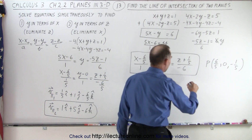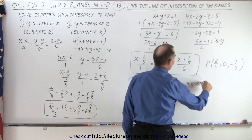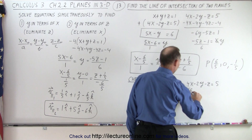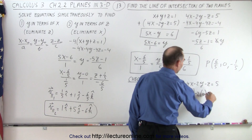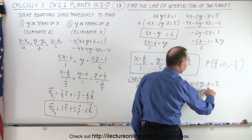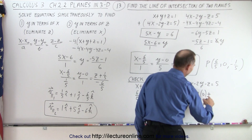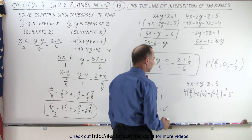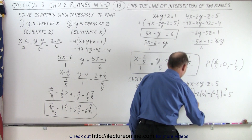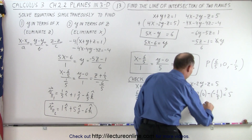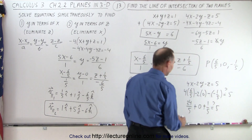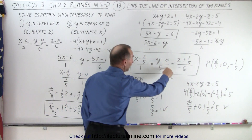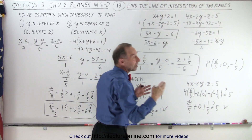Now let's plug that point into the second equation: 4x minus 2y minus z is equal to 5. Plugging in x, y, and z: 4 times 6/5 minus 2 times 0, minus negative 1/5, which gives us minus minus 1/5. Is that equal to 5? We have 24/5 plus 0 plus 1/5 — that's 25/5 which equals 5. So that checks as well. I took the point on the line and plugged it into both equations for the plane and it satisfied both.